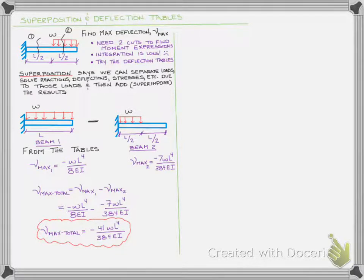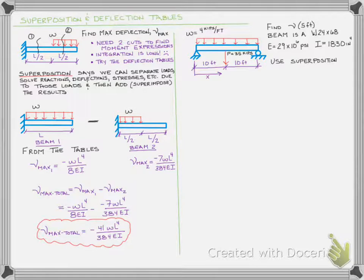Let's look at a second example. Let's actually find the displacement at five feet from the left side for this simply supported beam that is 20 feet long, has a uniform load across the entire length, four kips per foot, and it has a point load in the center of 35 kips.